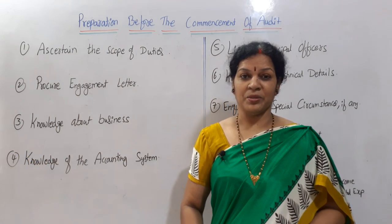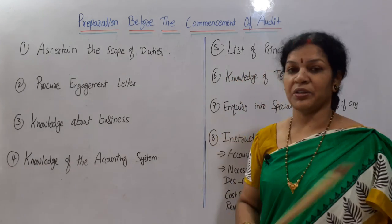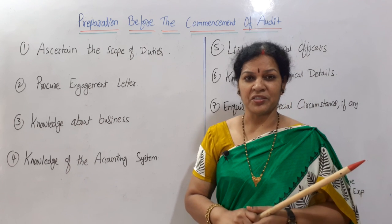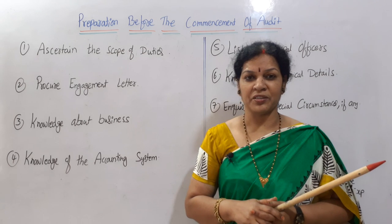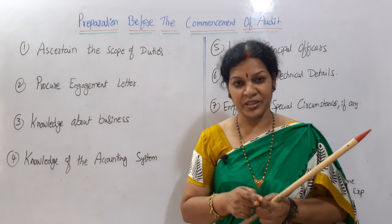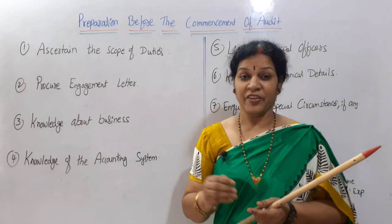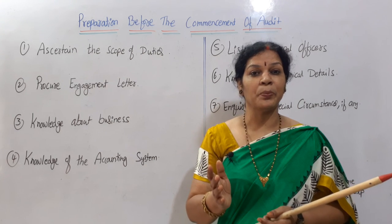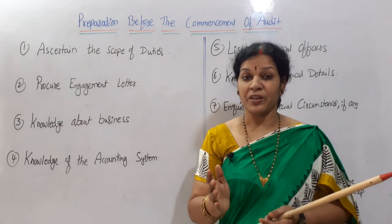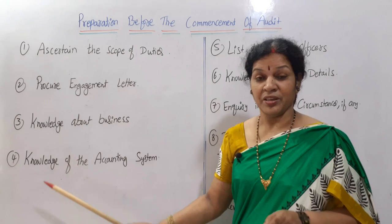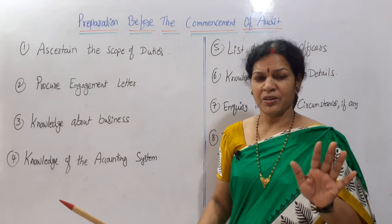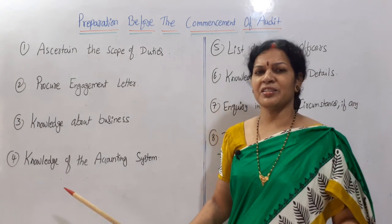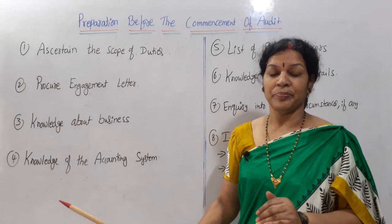After gaining knowledge of the business, the fourth step is knowledge of the accounting system. The auditor must understand how the company is maintaining its accounting system, what methodologies they are using, and whether the company has any internal auditing or internal control system. If an internal control system exists, he needs to understand how it is working and what special attention it requires. All this knowledge must be obtained at this fourth stage.